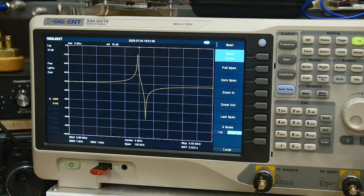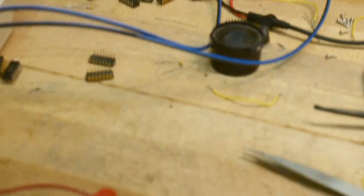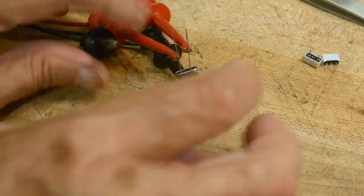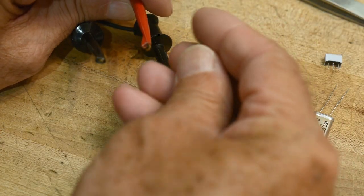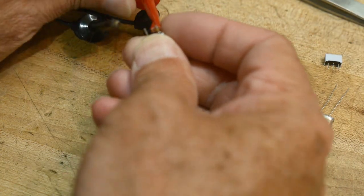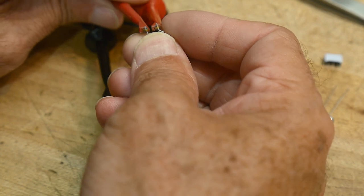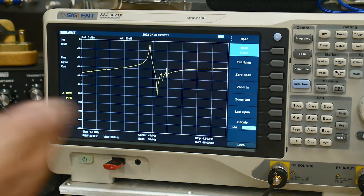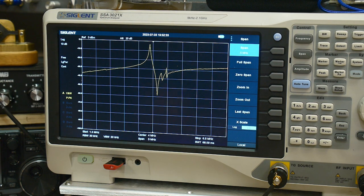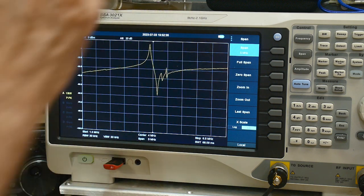Let's go ahead and we will do the same thing. This time we will put in a ceramic resonator. This one happens to be a 4 megahertz ceramic resonator. If we go back to the spectrum analyzer, there we go.